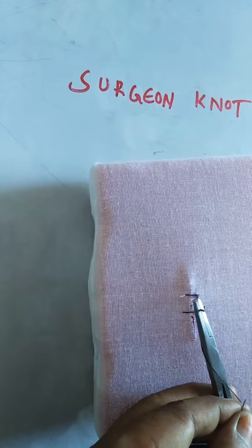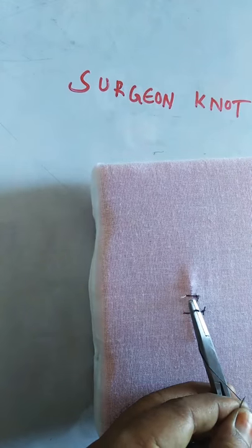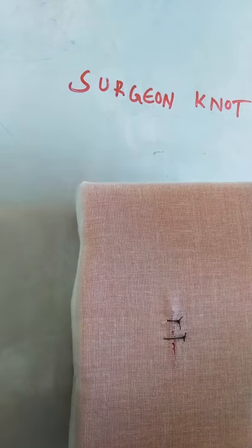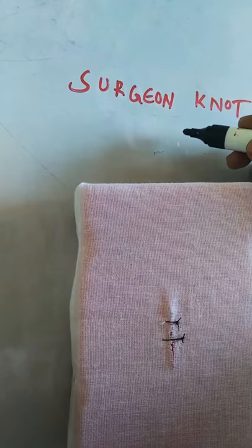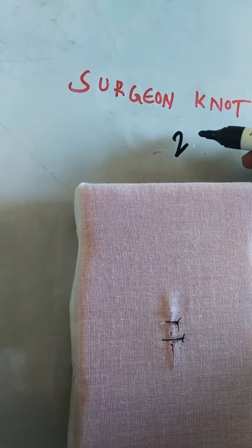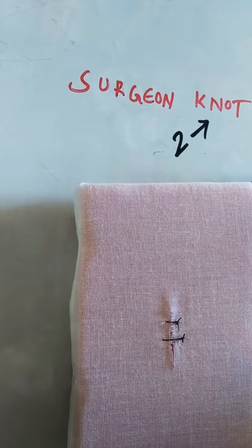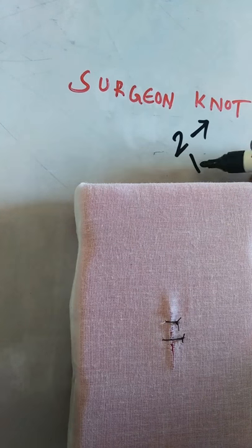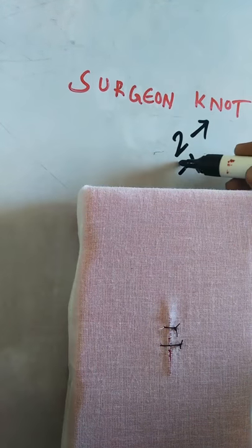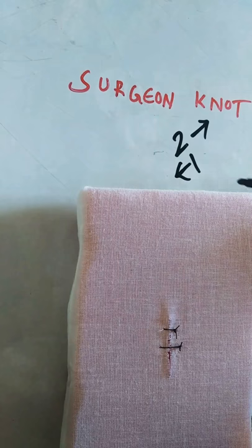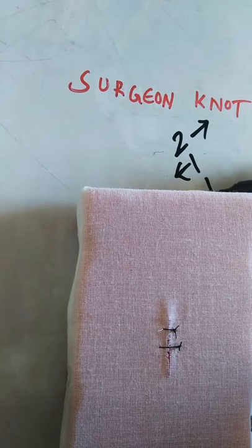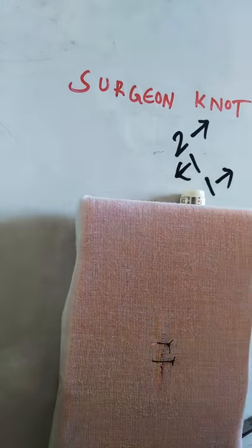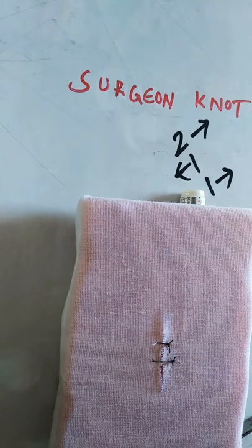For understanding purposes, you can write it like this: the first tie is two throws in the clockwise direction, the second tie is one throw in the anti-clockwise direction, and the third tie is again one throw in the clockwise direction. This is the surgeon's knot.